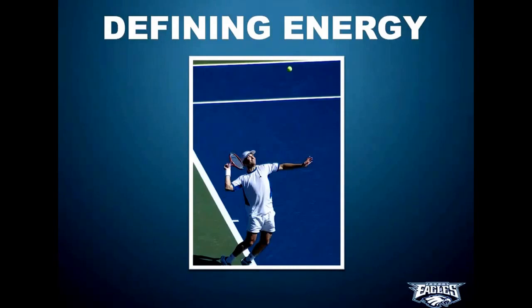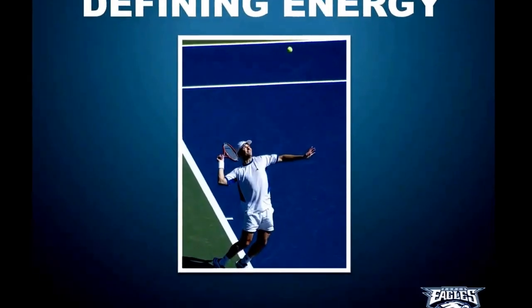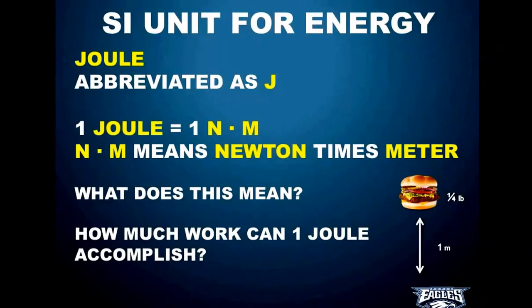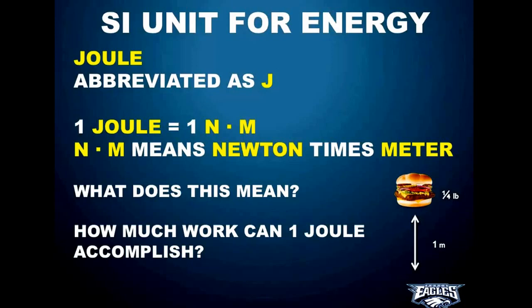Andre Agassi, in this picture, is smacking a tennis ball, and I'd say he's using about 30 or 40 joules of energy to hit that ball. Speaking of joules, the SI unit for energy is the joule. SI stands for System International — the international system of units that the world has agreed upon so that we all measure using the same things and don't get confused. The joule is abbreviated as J in problems, and it means one newton meter — N·M means newton times meter.